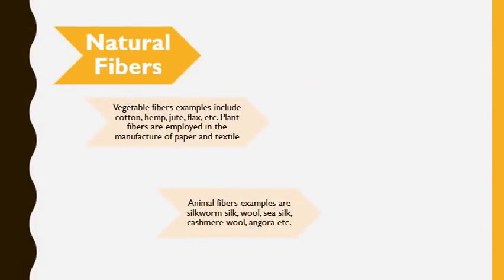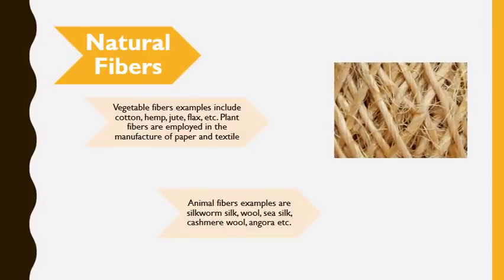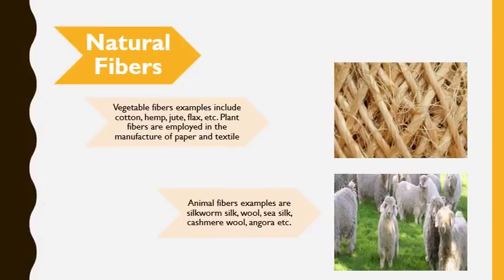You would have already studied in your previous class about natural fibers. Natural fibers are basically vegetable fibers which can be taken from plants. The examples are cotton, hemp, jute, flax, etc. And there are some animal fibers which are obtained from silkworms or sheep. The examples are silk, wool, cashmere wool, and angora. So all these are examples of animal fibers.